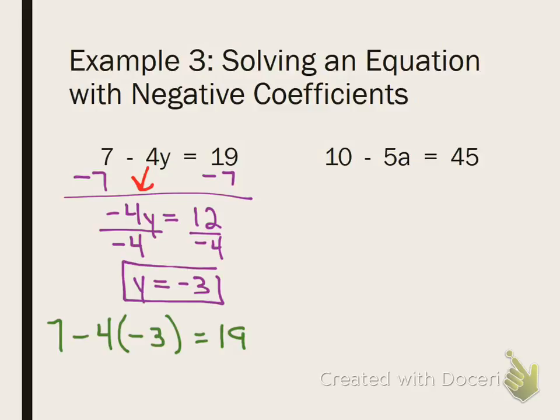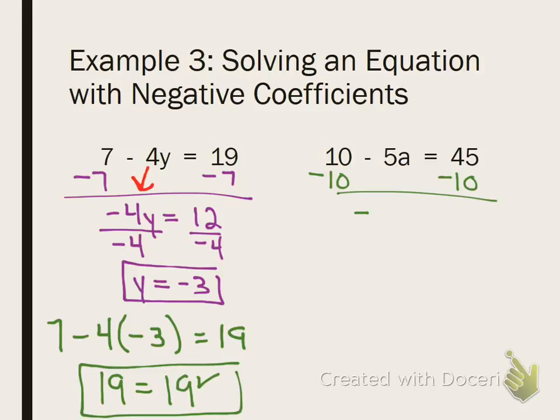Once you're done copying that down, I want you to do the second one on your own. Be mindful of that negative coefficient, guys. Make sure you take it with you to the other side of the equation. Maya, what do I do first? Subtract 10 from both sides. Very good. Now I bring down my negative 5a. Hayden, what do I do next? Very good. Divide both sides by negative 5. a equals negative 7. Who got it right? Awesome. Good job. Any questions?